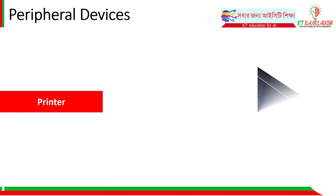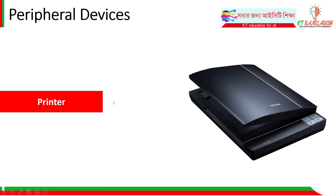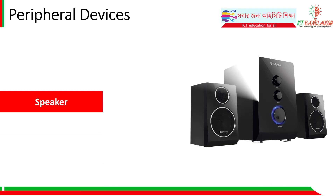A scanner scans physical documents: you place a document on the scanner, it uses light and a laser to scan the document, and the scanned image is sent as input to the computer. A speaker outputs sound — music or audio — from the computer, and is an output external peripheral device.